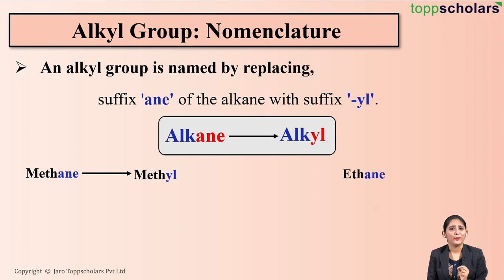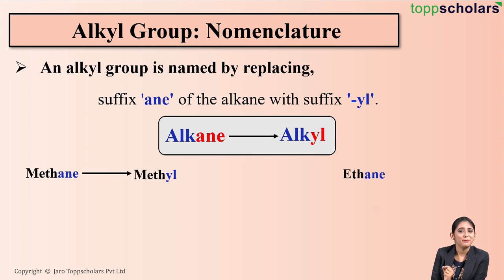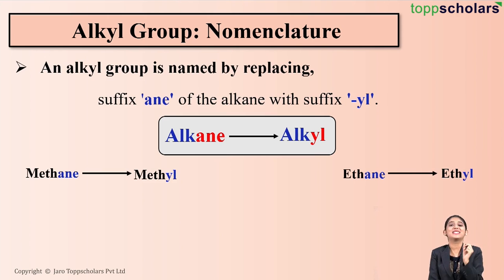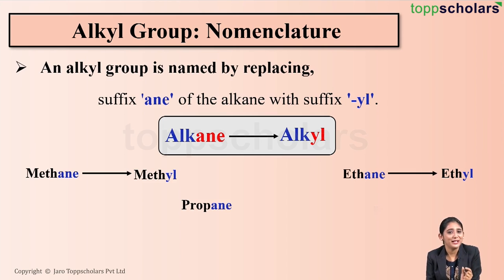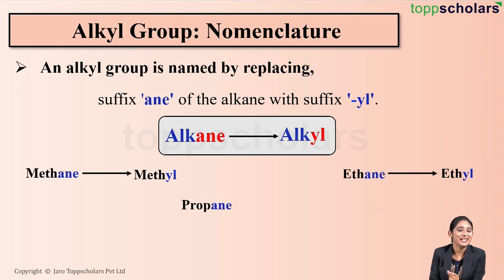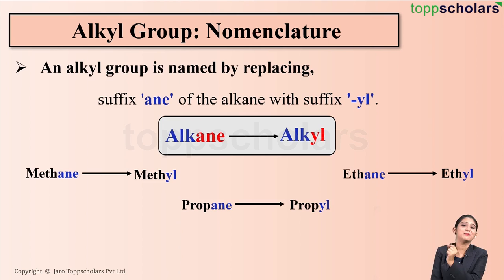Let's do it for ethane now. You need to replace the suffix '-ane' by '-yl', so it becomes ethyl. Let's do it for propane — simply replace the suffix '-ane' by '-yl', so it becomes propyl.